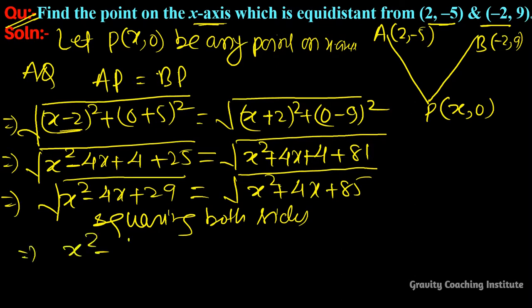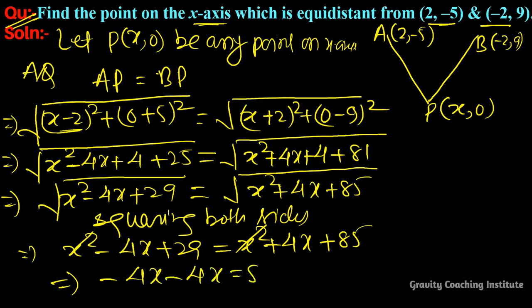So x² - 4x + 29 = x² + 4x + 85. The x² terms cancel, so -4x - 4x = 85 - 29, which gives -8x = 56.